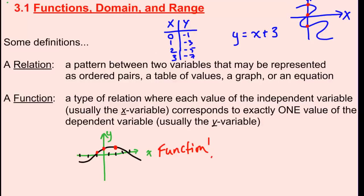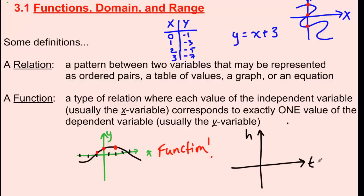If these axes change to different letters — say I had a set of axes where the horizontal axis was time and the vertical axis was height, which we see a lot — the independent variable is always the horizontal axis, and the dependent variable is always the vertical axis. That has to be consistent anytime we draw a graph. But no matter what, for any value of the independent variable, there can only be one possible dependent variable if it's going to be a function.